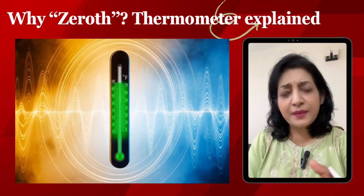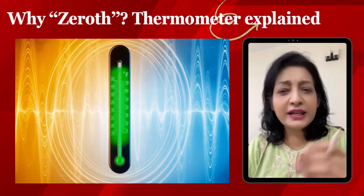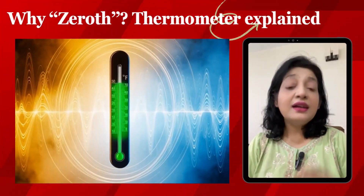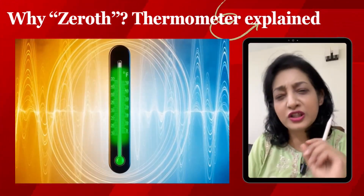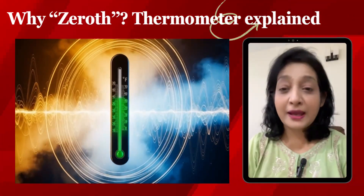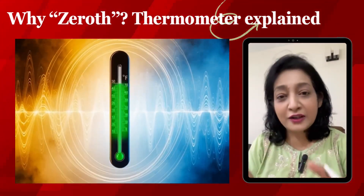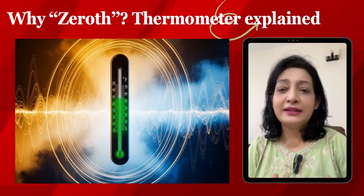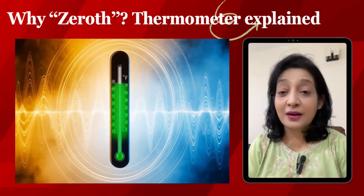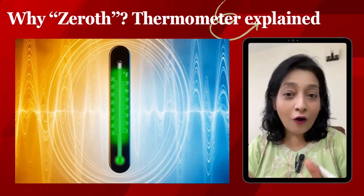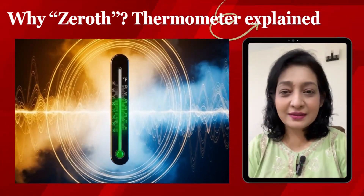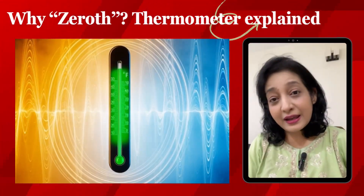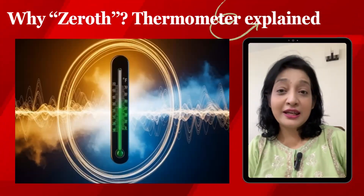Scientists had a problem — they had already named the existing laws first and second. This new law logically should come before them, so instead of renaming everything, Ralph H. Fowler in 1935 suggested the term 'zeroth law of thermodynamics' because it comes before the first law in logical importance.